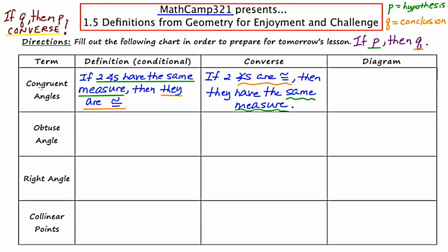I'll give you a quick illustration. I'm going to draw two angles, each measuring 25 degrees. They have the same measure, so the conclusion we can make is that they must be congruent — and we can write that accordingly. The C stands for conclusion. That first term took a lot of time, but now that we've gotten it out of the way, the others will go quite a bit quicker.